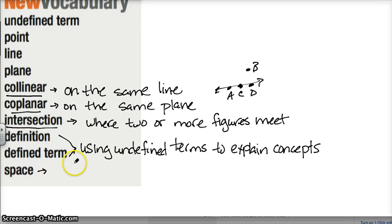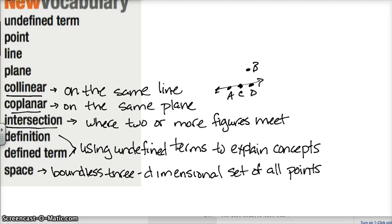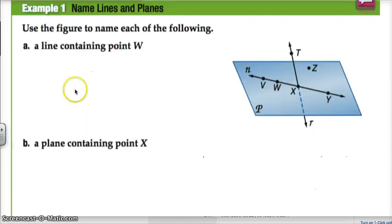The next thing that we're going to talk about is space. And I think you guys know what space is. Everything, right? But for us, we're going to talk about space as boundless, three-dimensional set of all points. And literally, that's it for our new vocabulary. Let's get started looking at some examples.